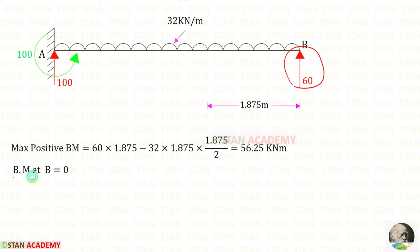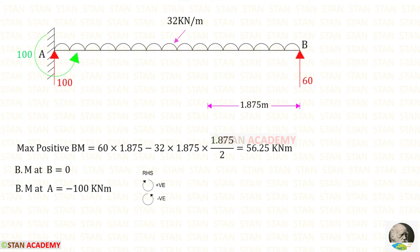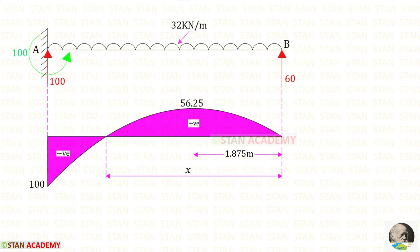We know that point B is a simply supported end, so the bending moment at B is 0. To find the bending moment at A, we use the right-hand side rule: clockwise is positive and anti-clockwise is negative. Ma acts in the anti-clockwise direction, so it is negative. The bending moment at A = −100 kNm. The bending moment diagram is now drawn. At a certain point, the bending moment becomes zero — this is called the point of contraflexure.